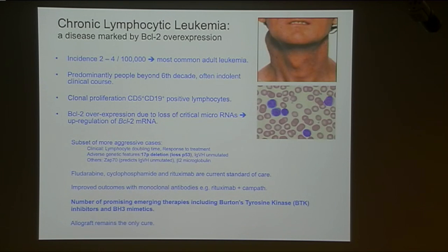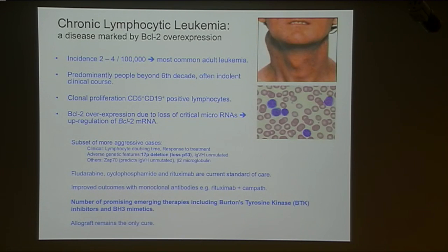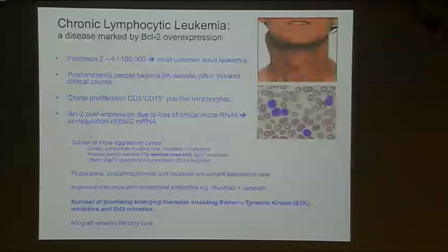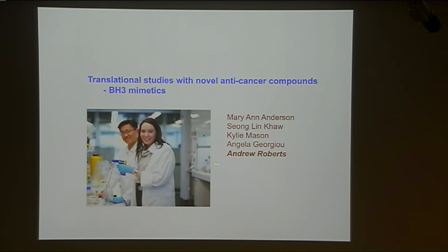We're really at the cusp of a major revolution in the clinic in terms of treatment of CLL because there are two drugs currently in early phase clinical trials that look incredibly exciting. The first is a BTK inhibitor of Bruton's tyrosine kinase, now in phase 2 clinical trials, looking very promising in patients with CLL. There are some patients whose disease is much more aggressive, including ones related to specific genetic factors, such as loss of the short arm of chromosome 17 that's usually taken to indicate loss of P53.